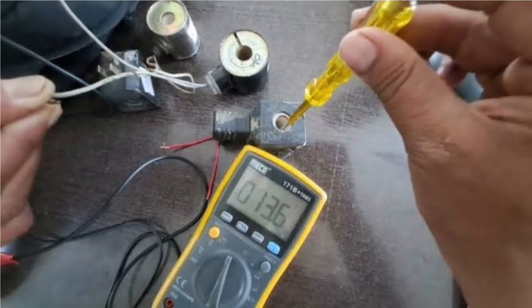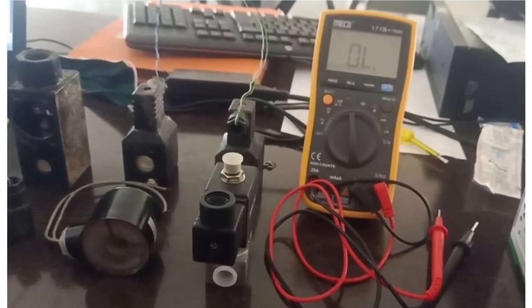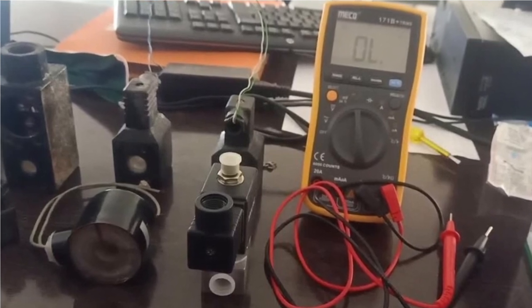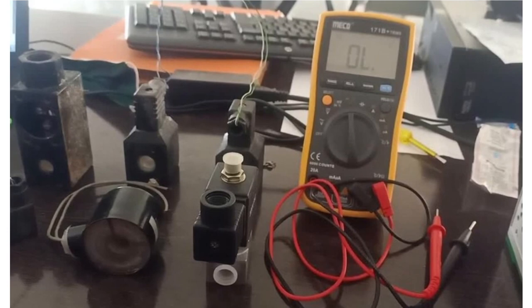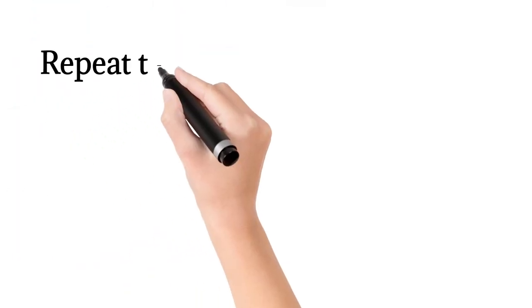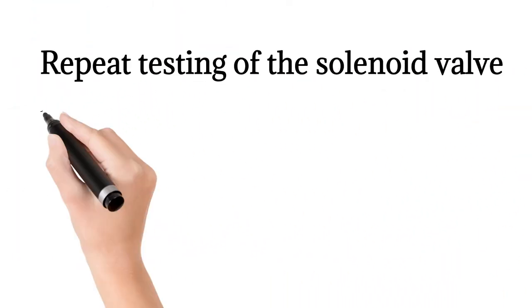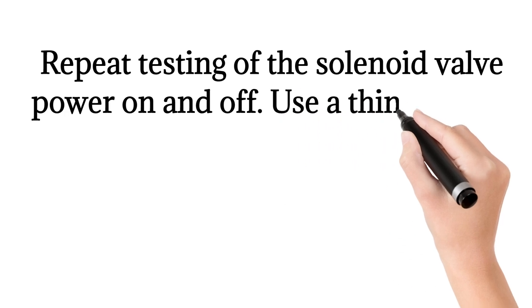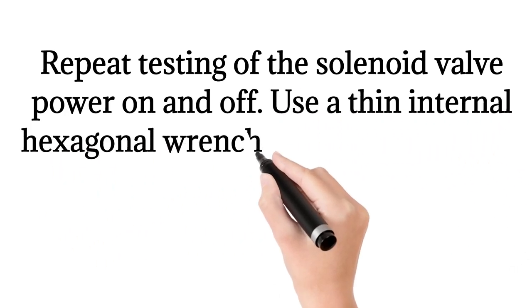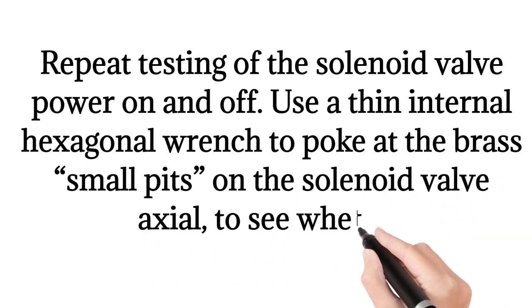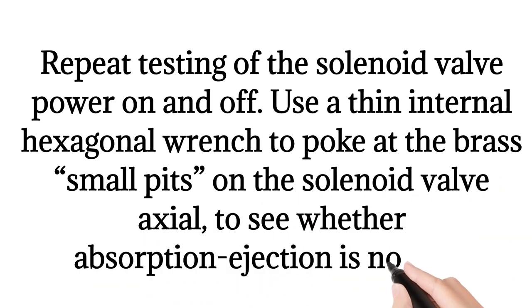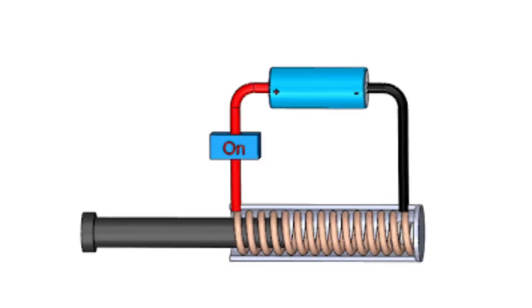Power on the solenoid valve and move the thin steel wire close to the coil to see whether its suction is viable. Repeat testing of the solenoid valve power on and off. Use a thin internal hexagonal wrench to poke at the brass small pits on the solenoid valve axial to see whether absorption and ejection are normal.